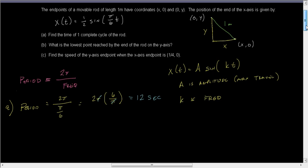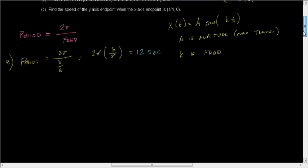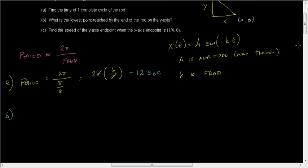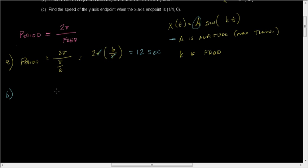Okay, part B. Part B says what is the lowest point reached by the end of the rod on the y-axis? Don't forget that our amplitude is given by the number in front of the sine.